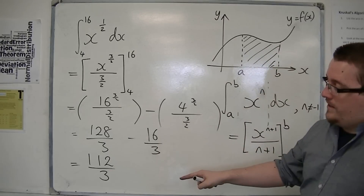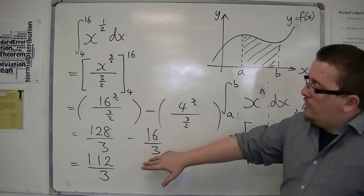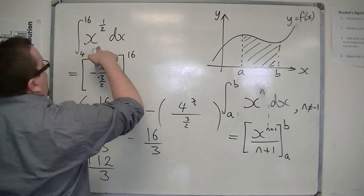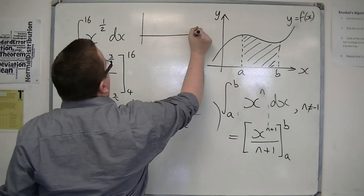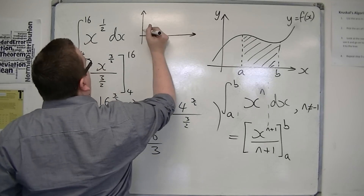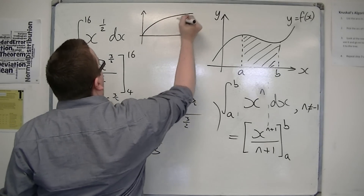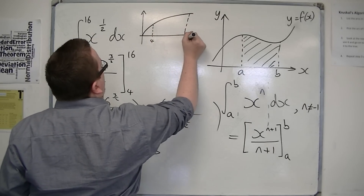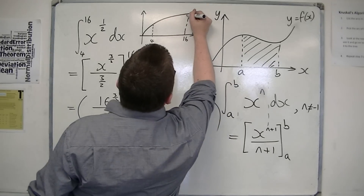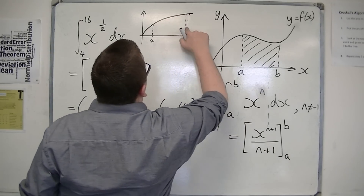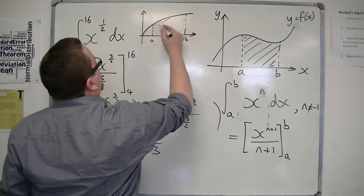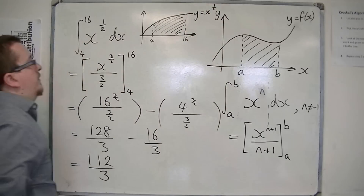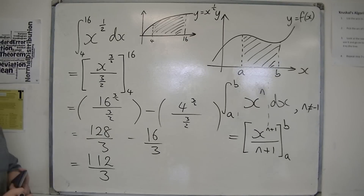So 112 over 3 is approximately 37.3 recurring. This is the exact area between 4 and 16 for the graph of y equals x to the half, which I'm looking at between x equals 4 and x equals 16. That's how integration is used here — the process is quite straightforward.